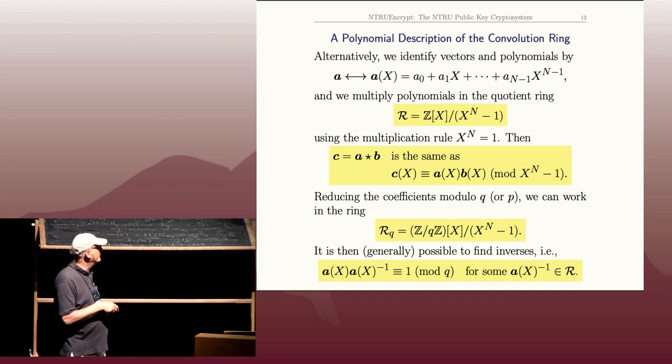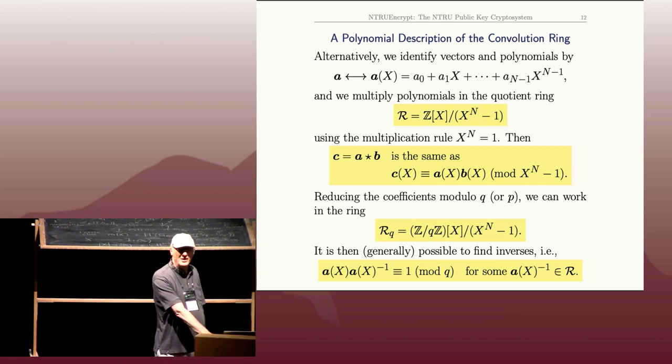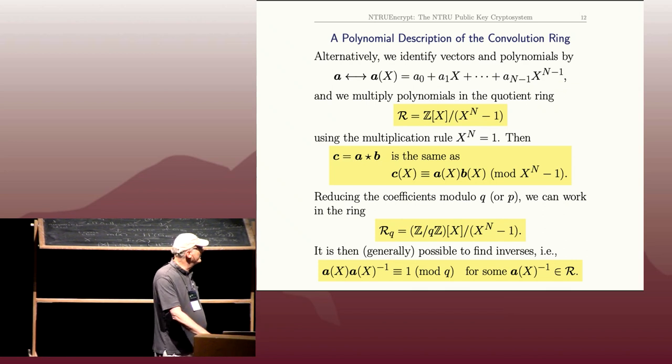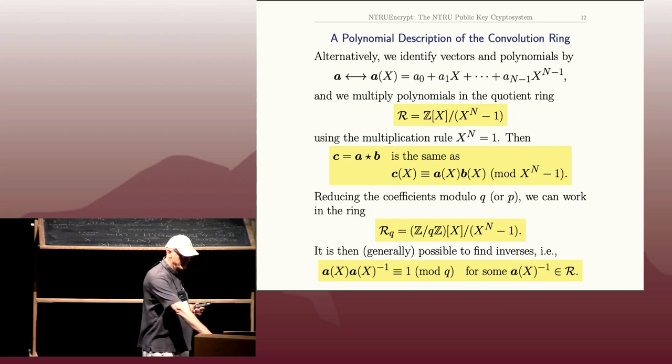Computing inverses in rings like this is just the Euclidean algorithm. For lack of time I won't go through that, but you might work out why computing inverses is equivalent to the Euclidean algorithm. The explicit condition to have an inverse is that a(X) and X^n - 1 are relatively prime in the ring of polynomials with mod Q coefficients. If they're relatively prime, you can use the Euclidean algorithm to find an inverse.